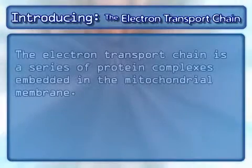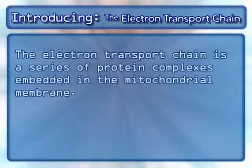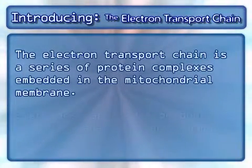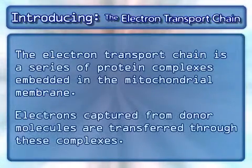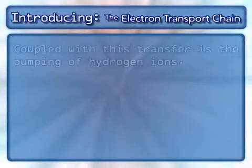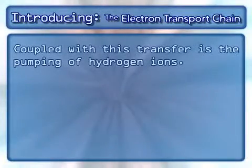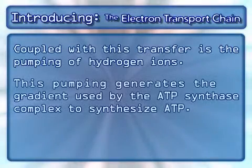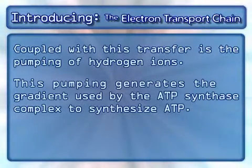The electron transport chain is a series of protein complexes embedded in the mitochondrial membrane. Electrons captured from donor molecules are transferred through these complexes. Coupled with this transfer is the pumping of hydrogen ions, which generates the gradient used by the ATP synthase complex to synthesize ATP.